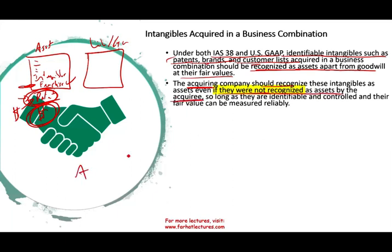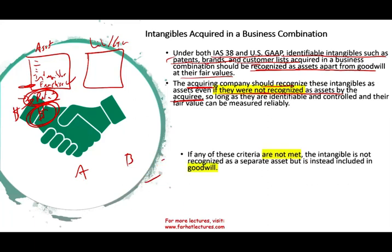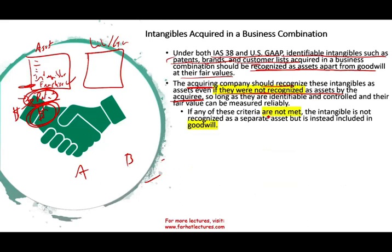The acquiring company should recognize these intangibles as assets even if they are not recognized as assets by the acquiree. Let's say company A buys company B. Company B might have a patent not on their books because they internally generated it — they never capitalized the cost. Company A says: I bought you because you have that patent. Although it's not on your books, I'm going to recognize it — as long as I can identify it and separate it from other assets, it's an asset.